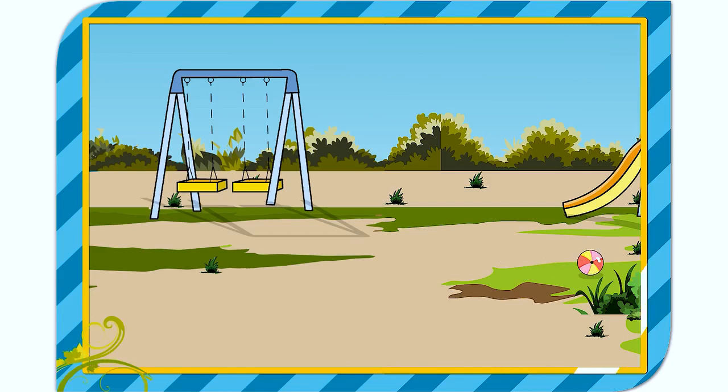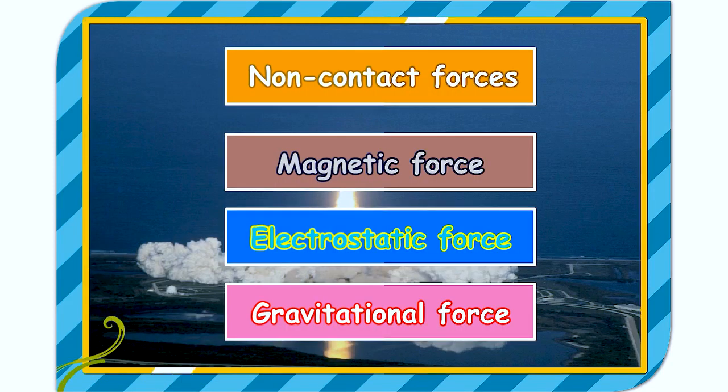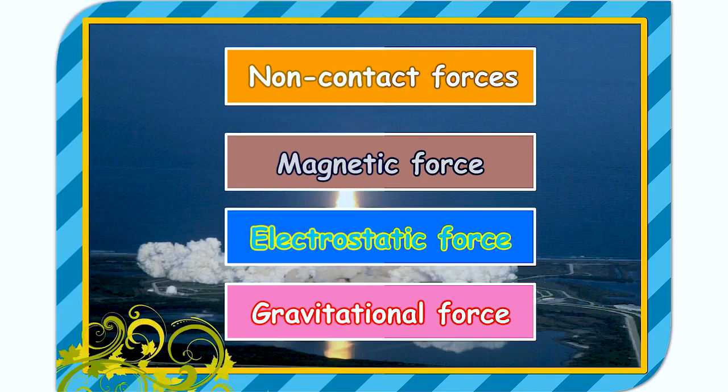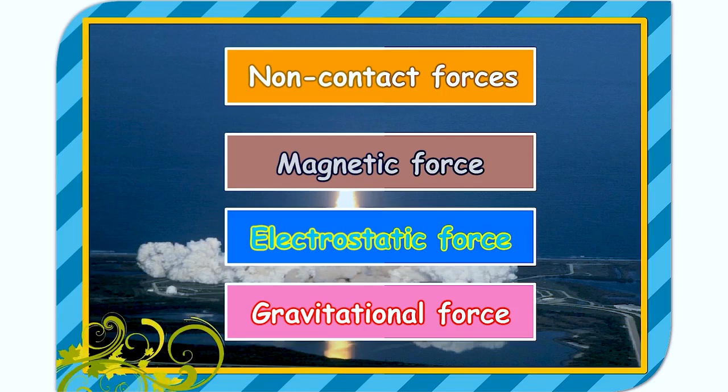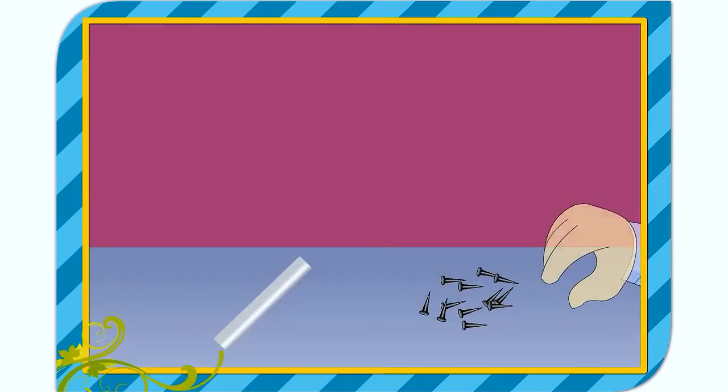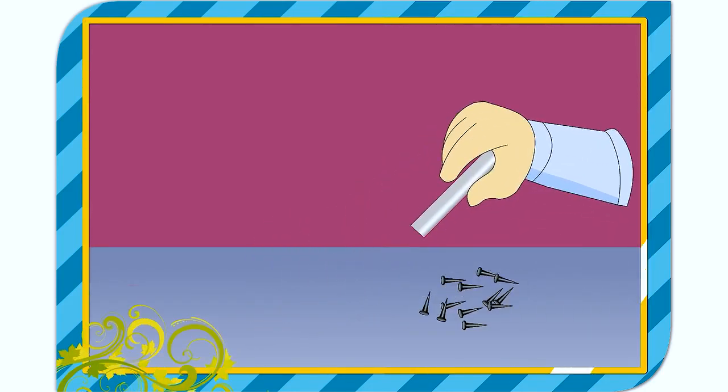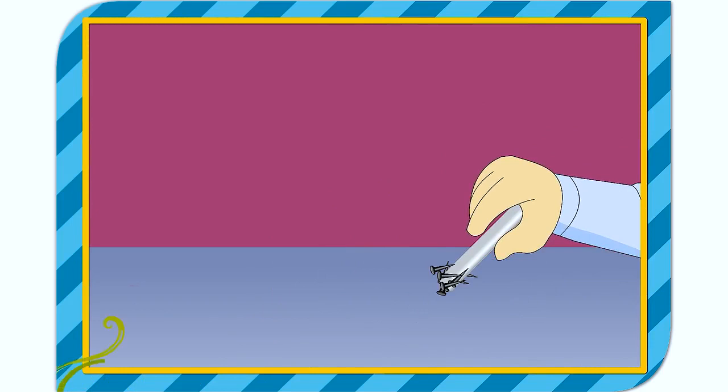Non-contact forces are the forces between two bodies which are not in contact with each other. This force acts through the space between them. Magnetic force, electrostatic force and gravitational force are examples of non-contact forces. You must have noticed that if you bring a magnet near iron clips, the iron clips move from their position towards the magnet. This happens due to magnetic force.